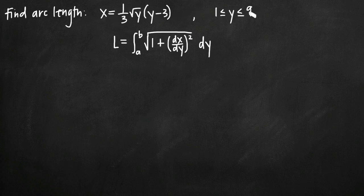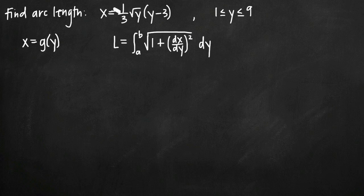The important thing to note about the function we have here is that x is defined in terms of y, so we have a function in the form x equals g of y. The most common arc length problem you'll run into is the opposite case, where you have y equals a function in terms of x — the form y equals f of x. In our problem they've switched it, and we have x in terms of y, x equals g of y. When you have a problem like that, your interval is defined for y instead of x.